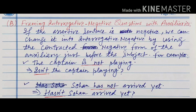Next is framing interrogative negative questions with auxiliaries. We form negative interrogative questions using 'not', and especially we use the contracted negative form. Contracted negative forms mean: 'is not' becomes 'isn't', 'has not' becomes 'hasn't', 'cannot' becomes 'can't', 'have not' becomes 'haven't'. If the assertive sentence is negative, we can change it into an interrogative negative sentence by using the contracted negative form of the auxiliary just before the subject. For example: 'The captain is not playing' becomes 'Isn't the captain playing?' And 'Sohan has not arrived yet' becomes 'Hasn't Sohan arrived yet?'